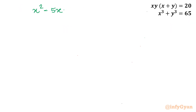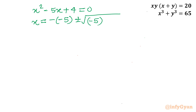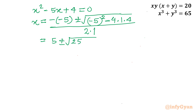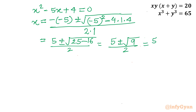For x² - 5x + 4 = 0, applying the quadratic formula: x = (−(−5) ± √((−5)² − 4·1·4)) / (2·1) = (5 ± √(25 − 16)) / 2 = (5 ± √9) / 2 = (5 ± 3) / 2. Taking the plus sign gives 8/2 = 4; taking the minus sign gives 2/2 = 1. So x = 4 or x = 1.